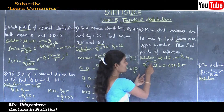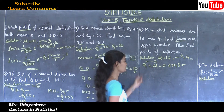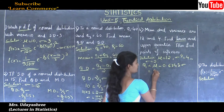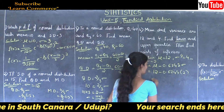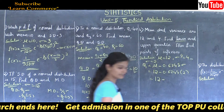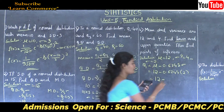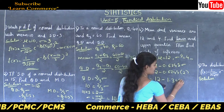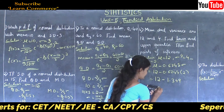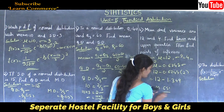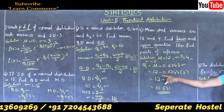Substituting mu = 12 and sigma = 2: Q1 = 12 − 0.6745 × 2 = 12 − 1.349 = 10.651. So the lower quartile Q1 is 10.651.